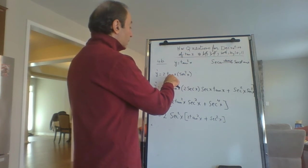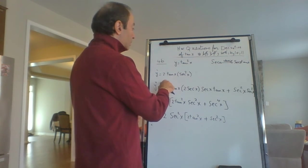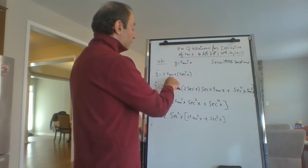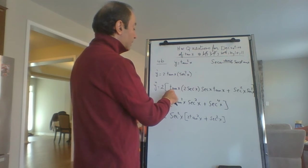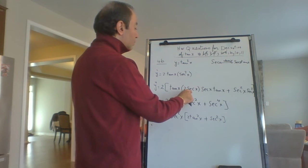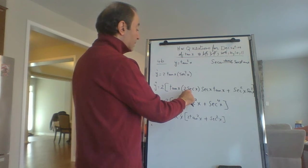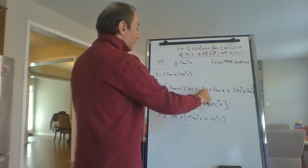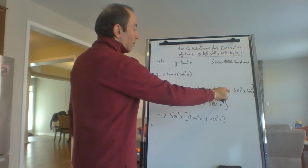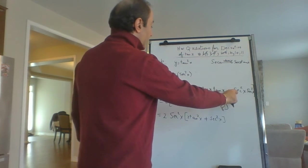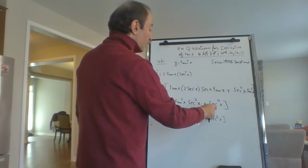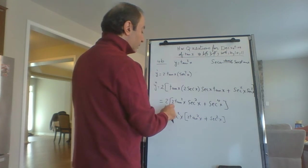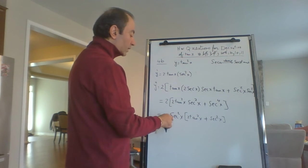Then I find the second derivative. The 2 is outside, so it is the first function — which is tan x — times the derivative of the second, which is 2 sine x secant x. The derivative of secant, from yesterday's homework, was secant tan, plus the second times the derivative of the first. This gives secant to the power of 4 and secant squared times tan squared.